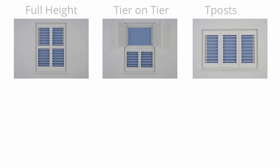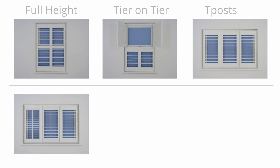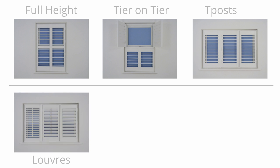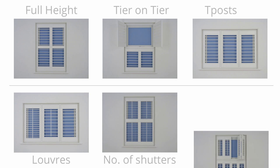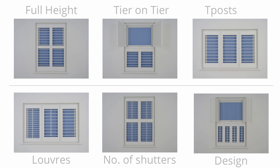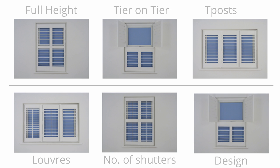There are three main shutter designs: full height, tier on tier, and T-posts. With each design you can choose the louver size, how to operate them, the number of shutters, and how you open them. It's really important the design of your shutters matches the window, so in this video I'll show you more about each design and the options you can choose.